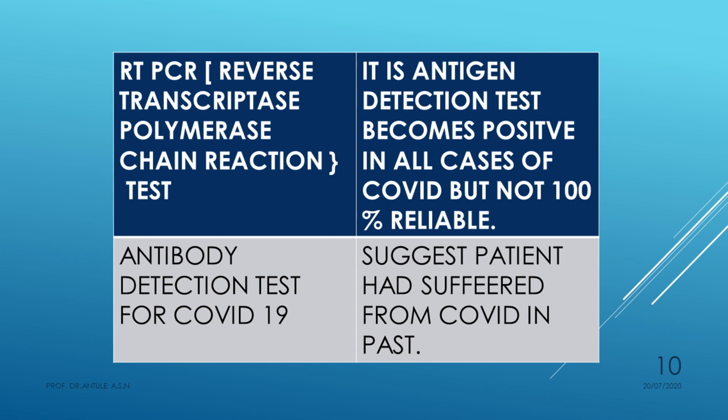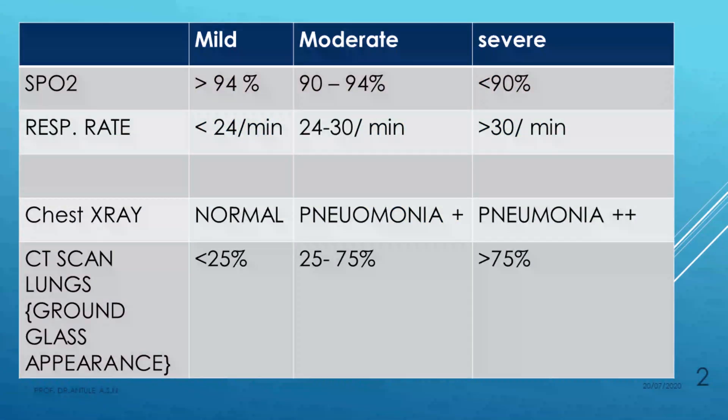Another test is the antibody test, used for those who may have suffered from COVID-19 in the past. Antibody detection suggests past infection, not current infection. For general practitioners, the key laboratory investigation to order is C-reactive protein (CRP) for all patients suffering from fever.